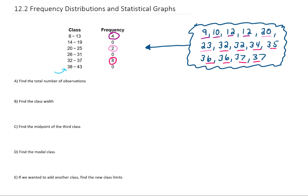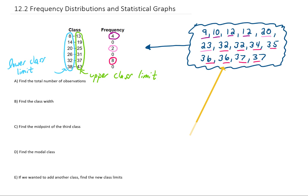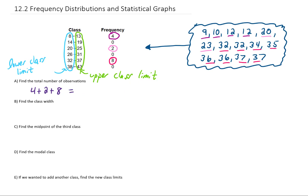Now just a couple of definitions. Each one of these classes has a smallest value called a lower class limit, and each one of these classes has a highest value called an upper class limit. Let's answer some questions. First, let's find the total number of observations. We could add up all of the frequencies in this table. We have frequencies of 4, 2, and 8. Adding those together gives us a total of 14 observations.